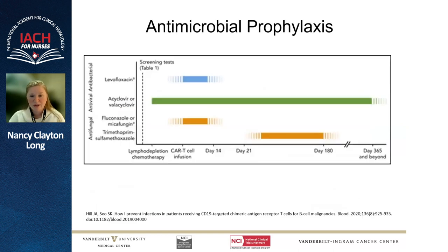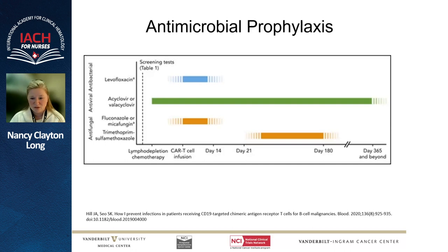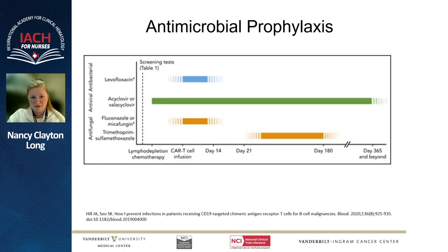For infection prevention, we use a broad-spectrum antibiotic, an antiviral covering HSV and VZV, and an antifungal covering candidal infections. Consider when to use a mold-active azole — for patients who've had a prior fungal infection like aspergillus, severe neutropenia for greater than three weeks, or significant immunosuppression. We also recommend PJP prophylaxis in the long-term setting.